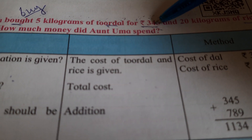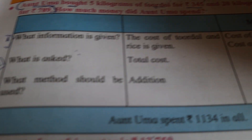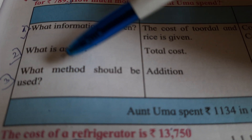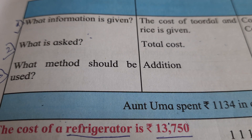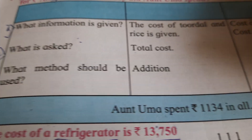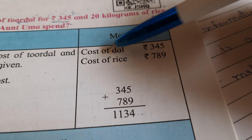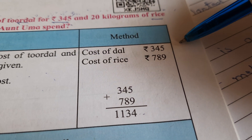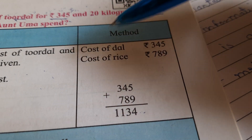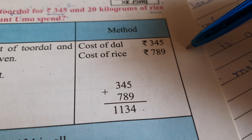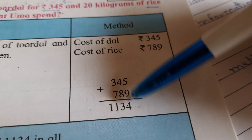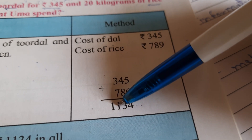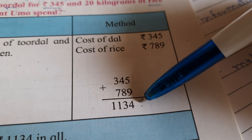And what method should be used to solve this sum? Addition. You can see the cost of turdal is Rs. 345 and the cost of rice is Rs. 789, so they should get added. The answer is Rs. 1134.